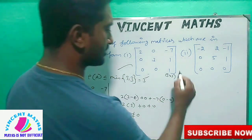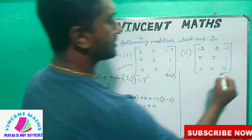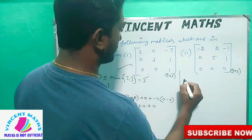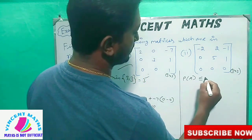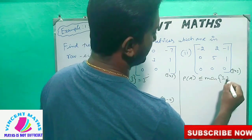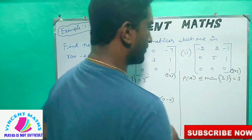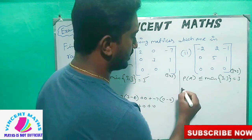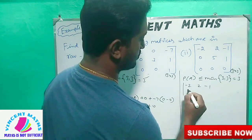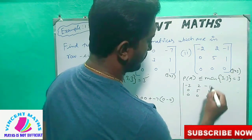Now let's write the second solution. The second solution is the same — we have a 3 by 3 matrix. Then we have the condition: rho of A less than or equal to minimum of 3, 3. The matrix entries are: minus 2, 2, minus 1; 0, 5, 1; 0, 0, 0.